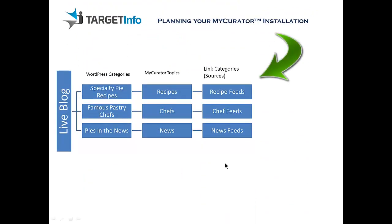Sources tell MyCurator what to read for each topic. We use the WordPress links pages for sources. You need at least one link category, or source, for each topic. You want to create your link categories first, so that when you add actual feeds as link entries, you can assign them to the appropriate link category. It's fine that their names mirror the topic you expect them to be used with.